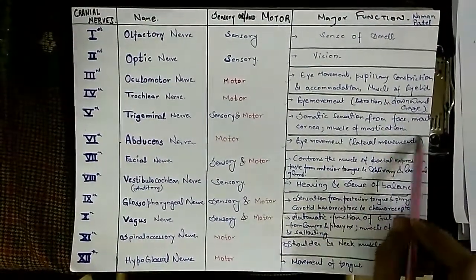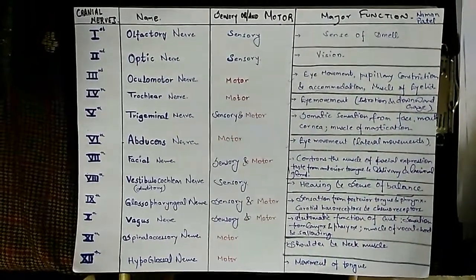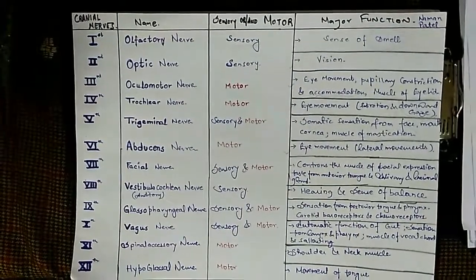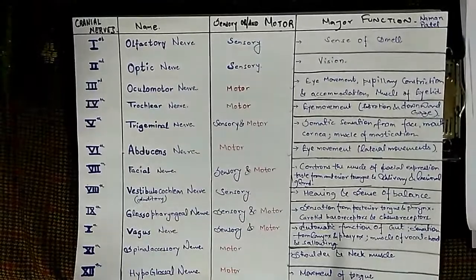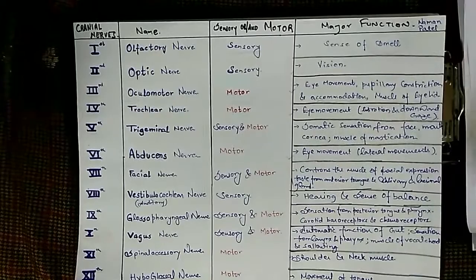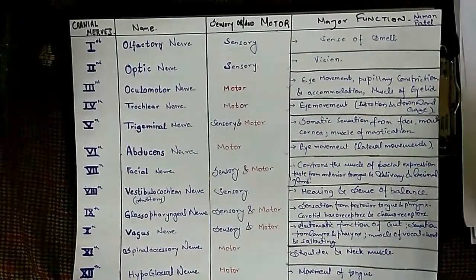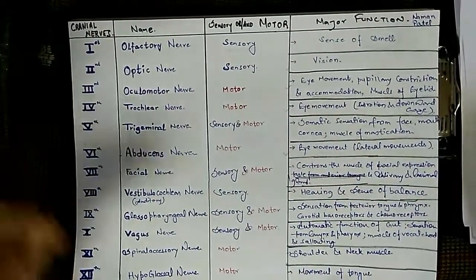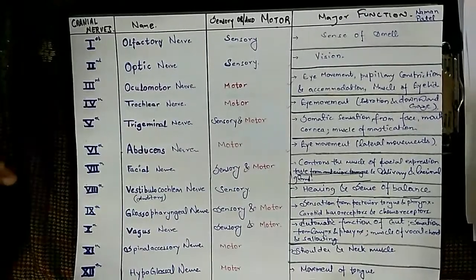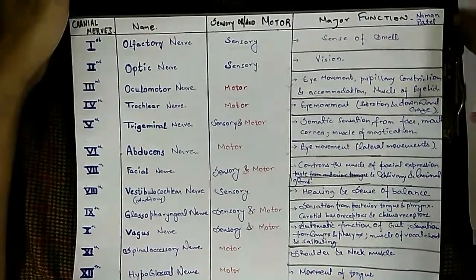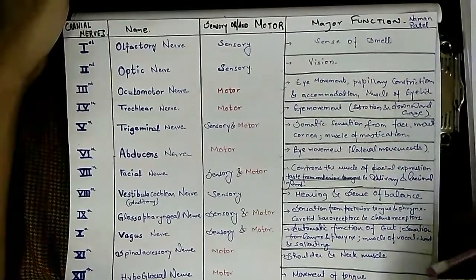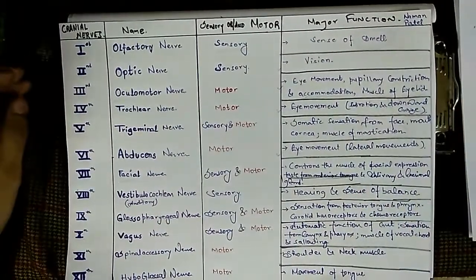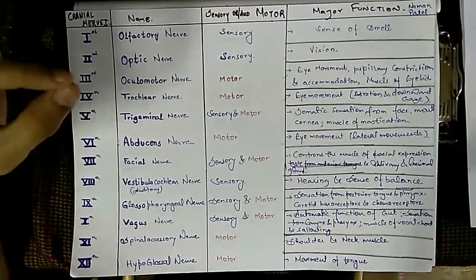The seventh cranial nerve is the facial nerve, which is both sensory and motor. It controls the muscles of facial expression and also governs taste from the anterior tongue — an important feature many wouldn't expect. In facial paralysis, the facial nerve is affected, which is why patients lose normal facial expressions.